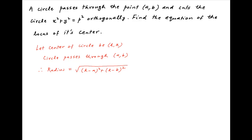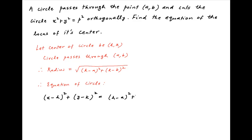Therefore the equation of the circle can be written as (x minus h) whole square plus (y minus k) whole square is equal to (h minus a) whole square plus (k minus b) whole square.